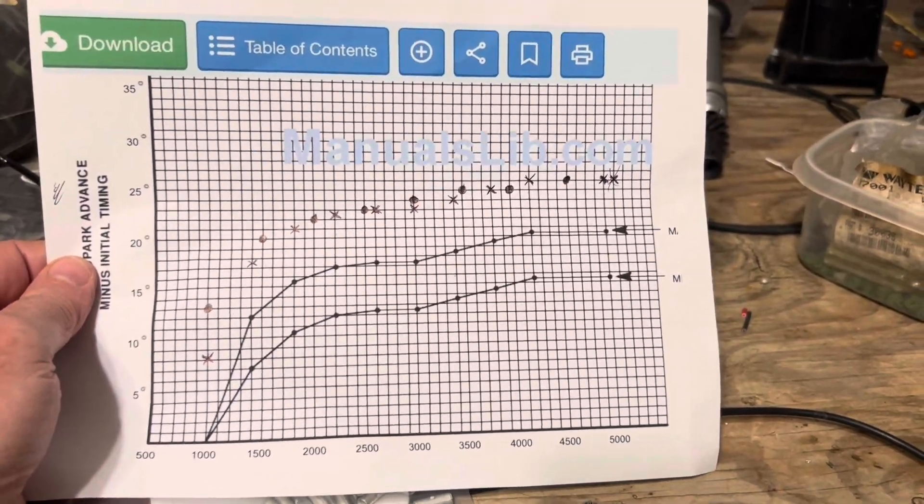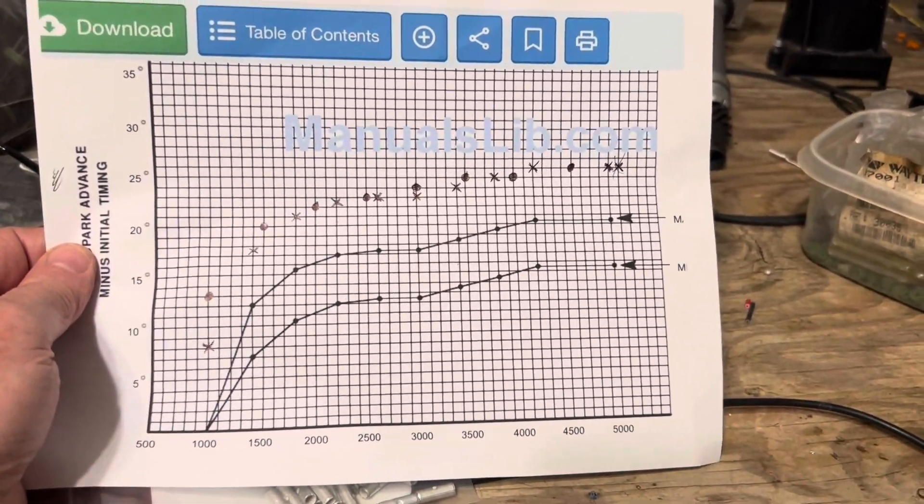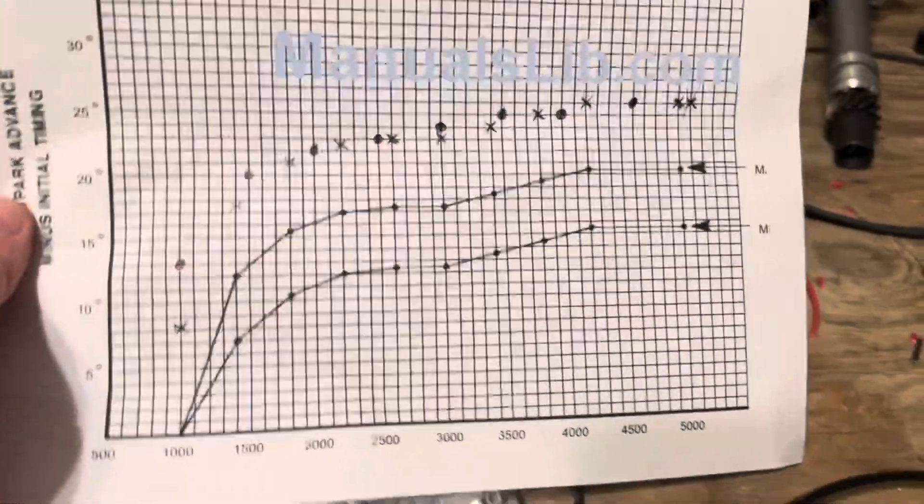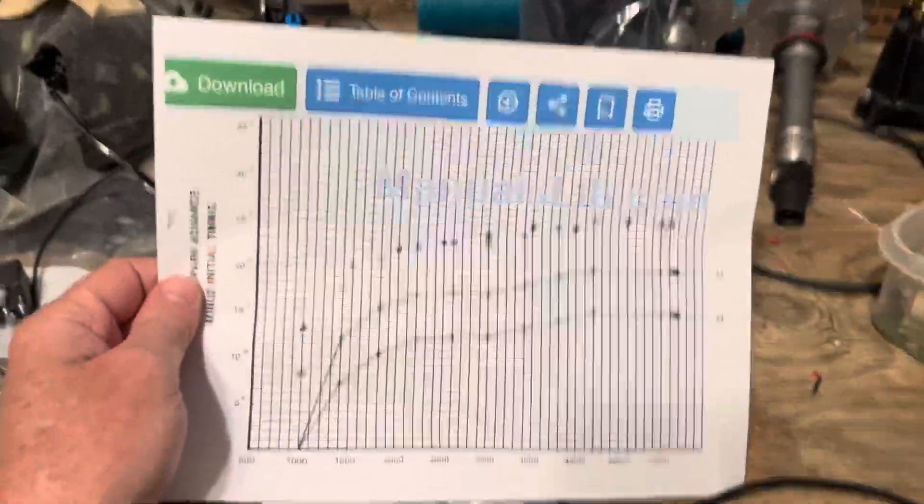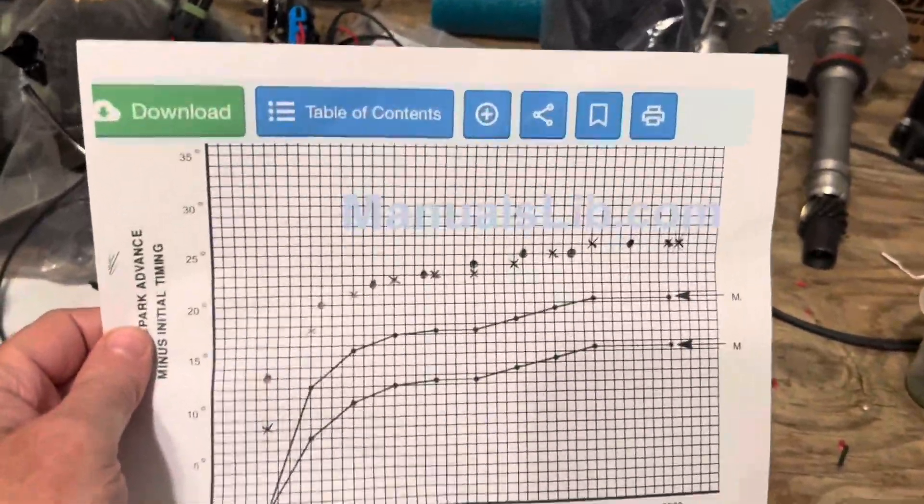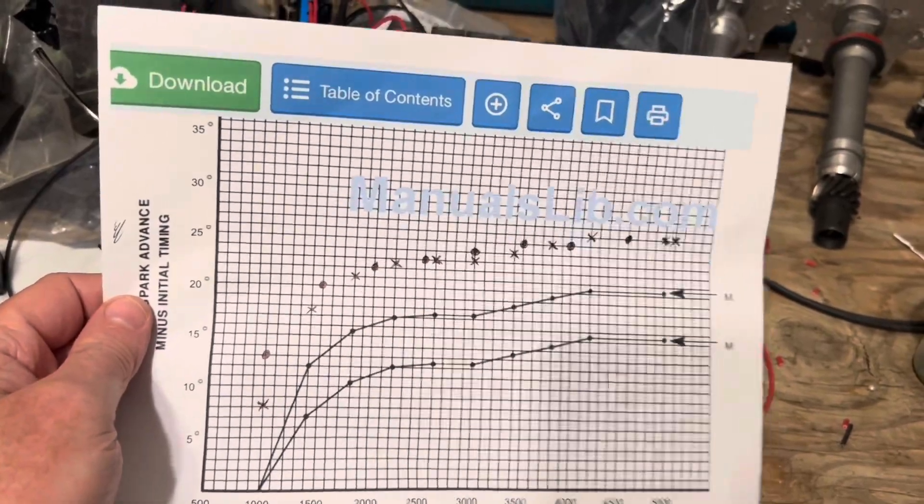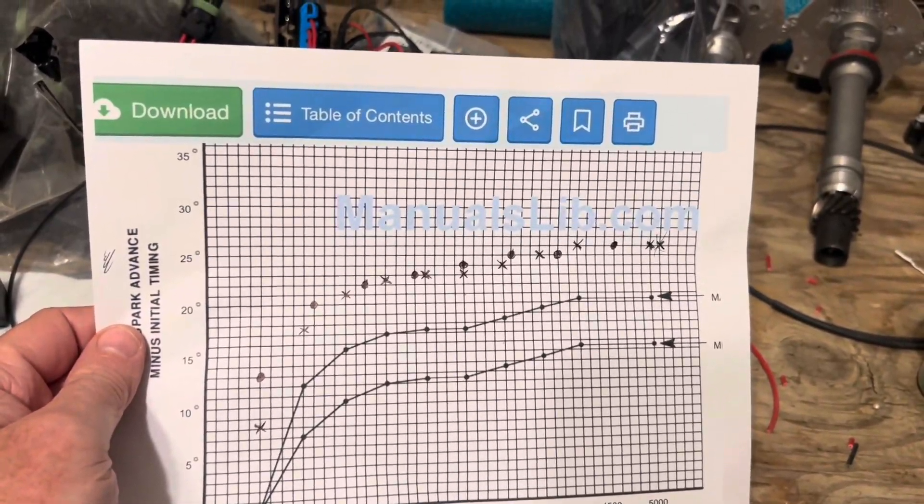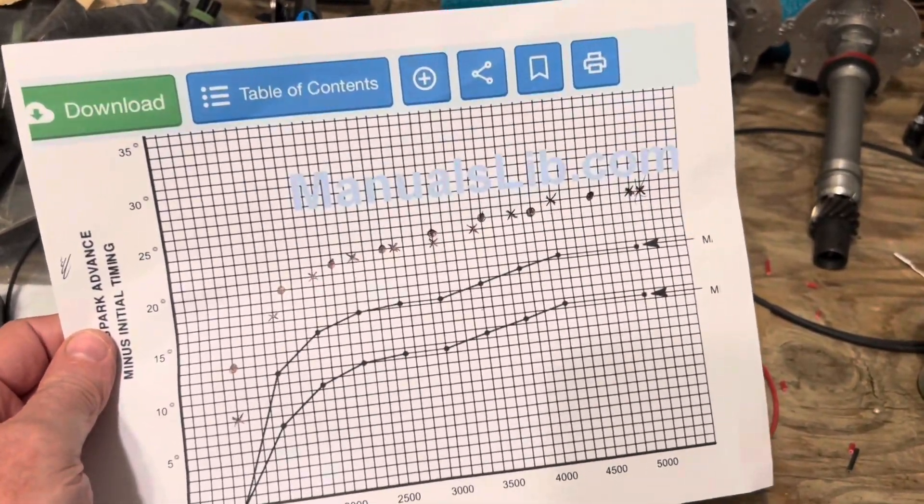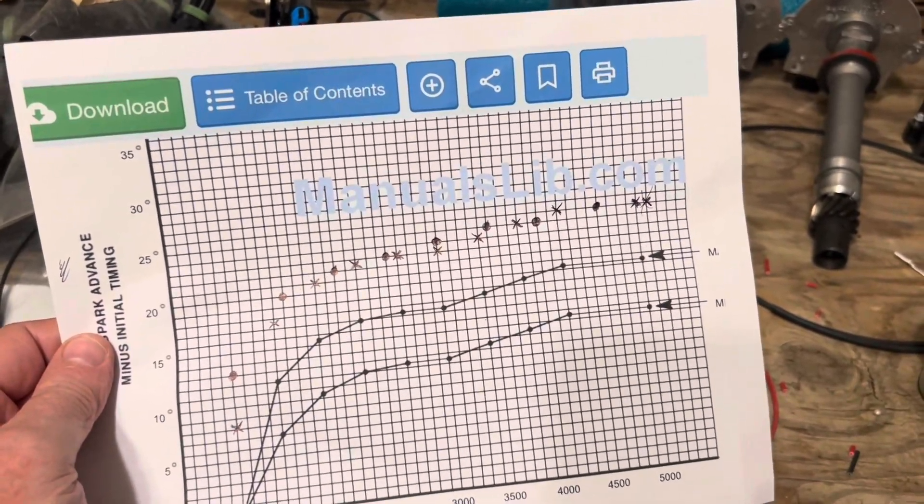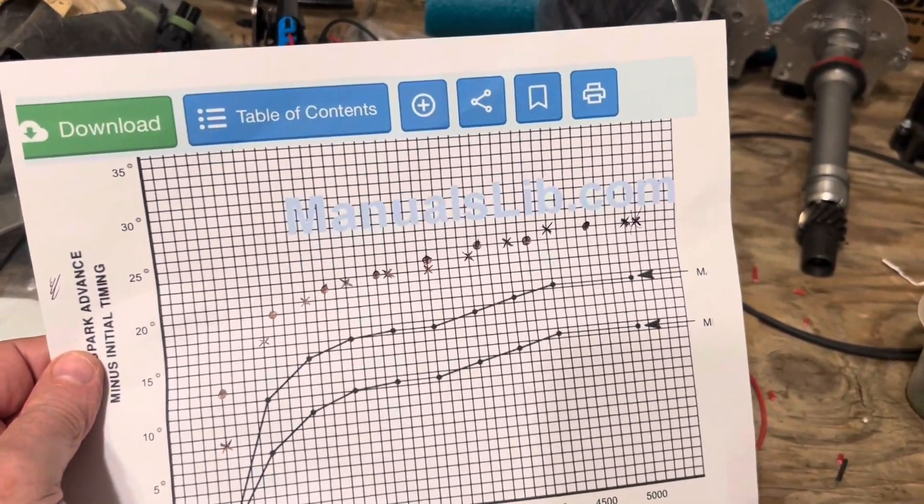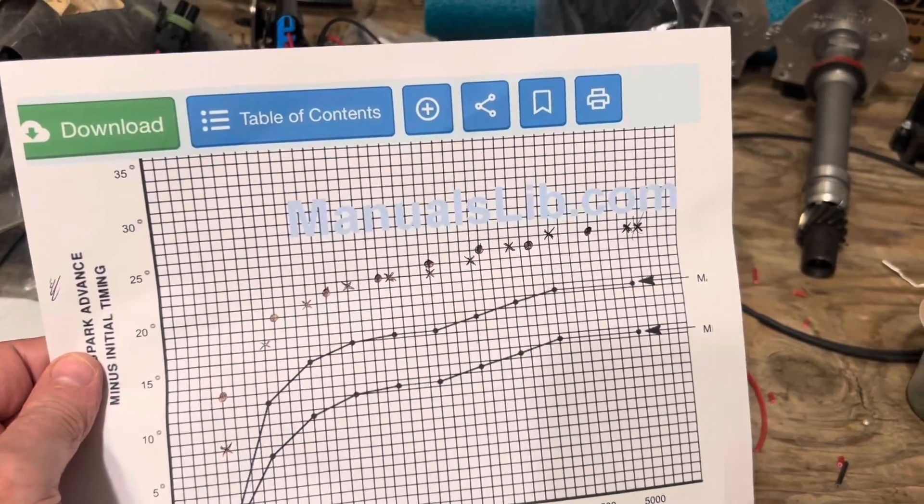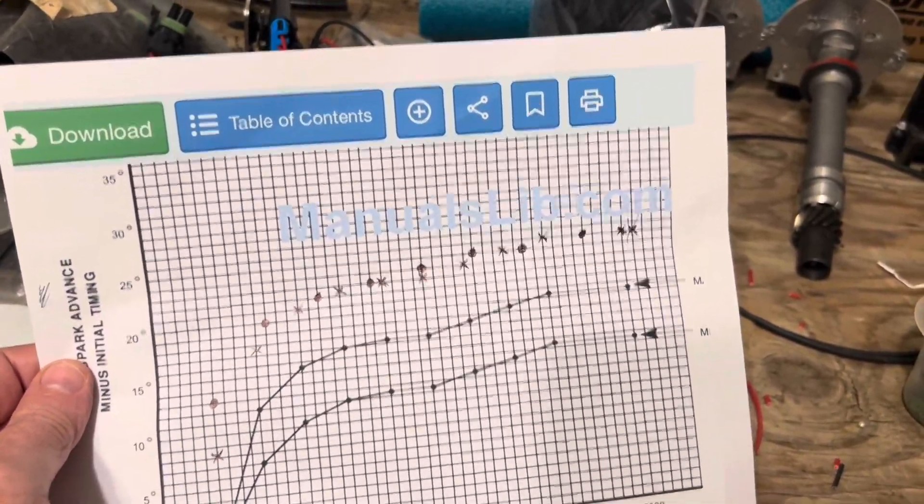And this curve is without the base timing added. So if the distributor is set to zero timing, this is what your timing would be. But the base timing on this engine is eight degrees, according to the information the customer sent me. So if you take the middle of these two curves, which is 18 degrees at the high end up here, and if you add 18 and 8, you get 26 degrees.